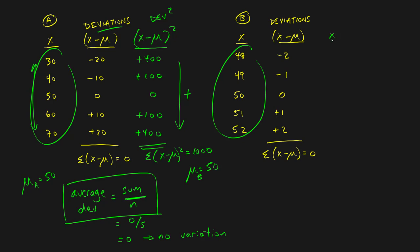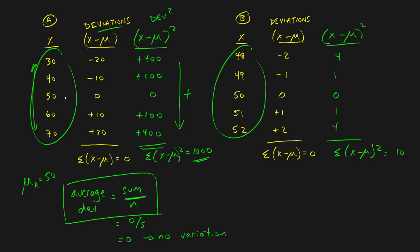For Company B, squaring the deviations gives four, one, zero, one, and four, so the sum of squared deviations equals ten. This is already going somewhere: before, we got zero for both companies; now we get different values — one thousand for Company A and ten for Company B. Company A had more variation and gets the larger number; Company B had more clustering around fifty and gets the smaller number.